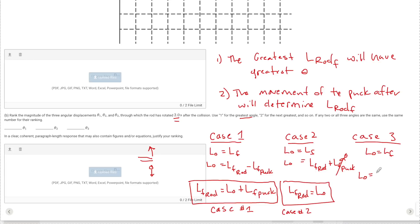And in the third case we're going to have L final of the rod plus the L final of the puck. Because in the third case the puck and the rod stuck together and moved in the same direction. So it's going to be the sum. So now I can say that the L final of the rod in this case is going to be equal to the initial angular momentum minus the L final of the puck. This is for case number three.